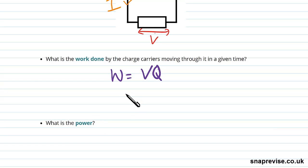So we've got a time Delta T, and we know that the charge moving through in that time will be Delta Q. So our work done is V Delta Q when we're thinking about this time frame.